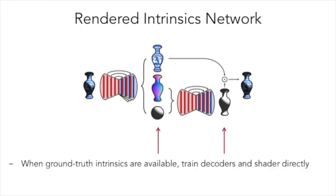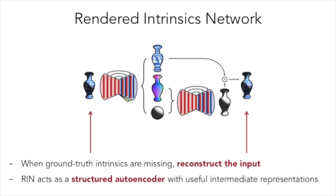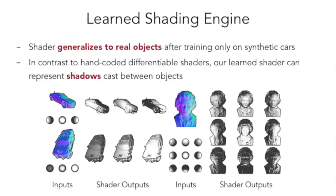Given ground truth labels, our model can be trained in the usual supervised fashion. More importantly, when these ground truth labels are missing, our model can improve its intermediate intrinsic image representations by virtue of reconstructing the input. This is possible because the learned shading engine generalizes well with no further training.